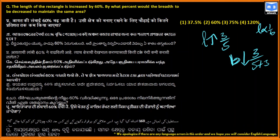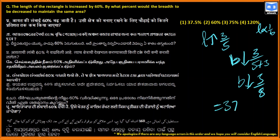The breadth is decreased by 3/8. We can write 3/8 as 37.5%. Therefore, the answer is 37.5%.